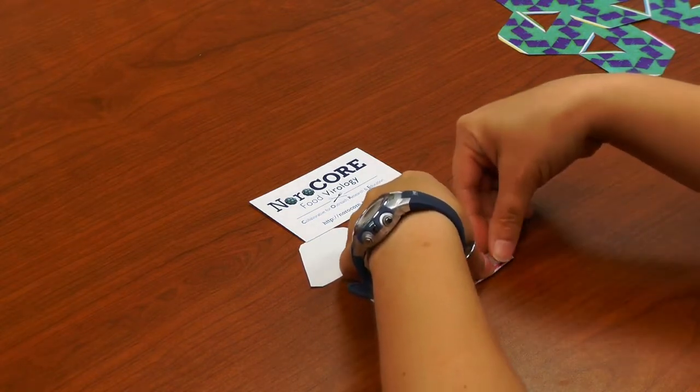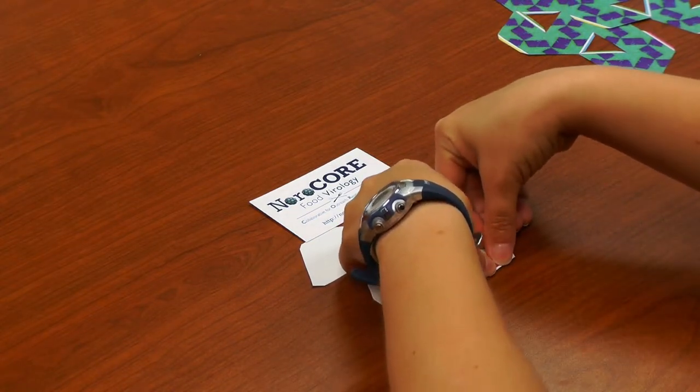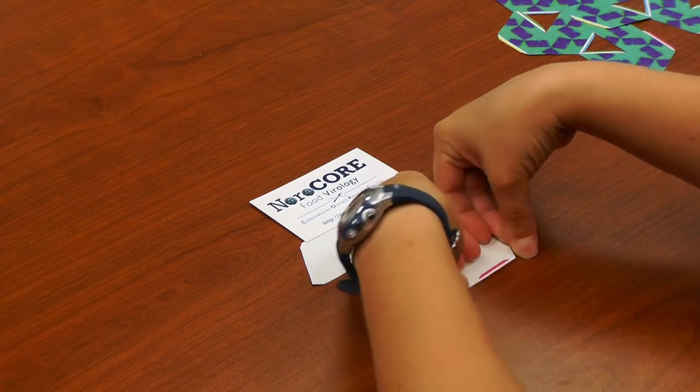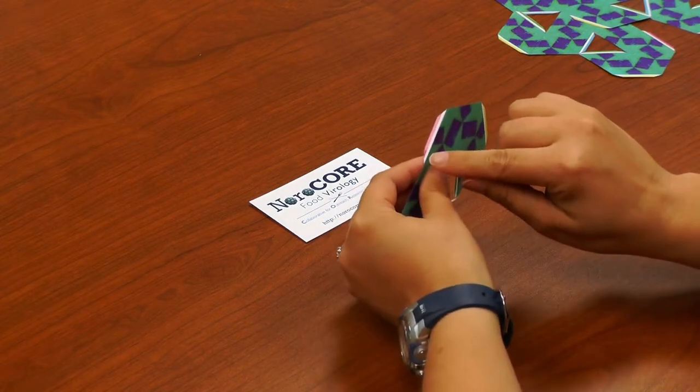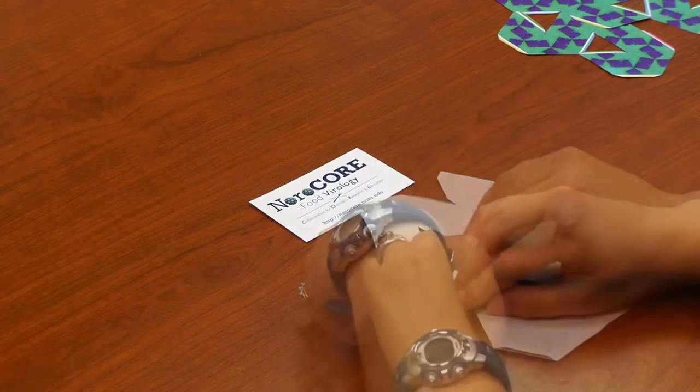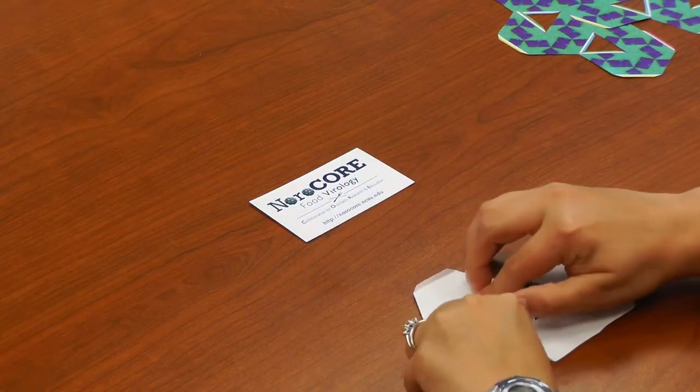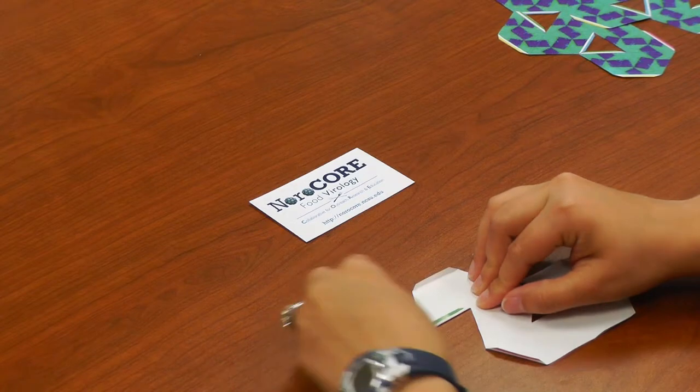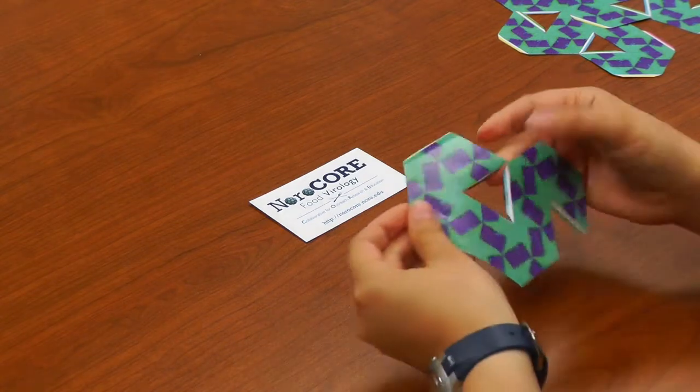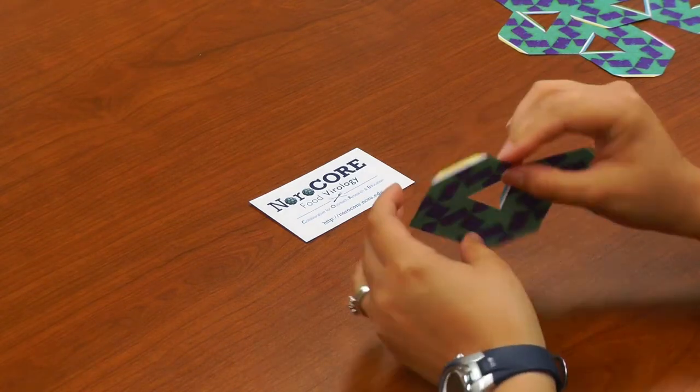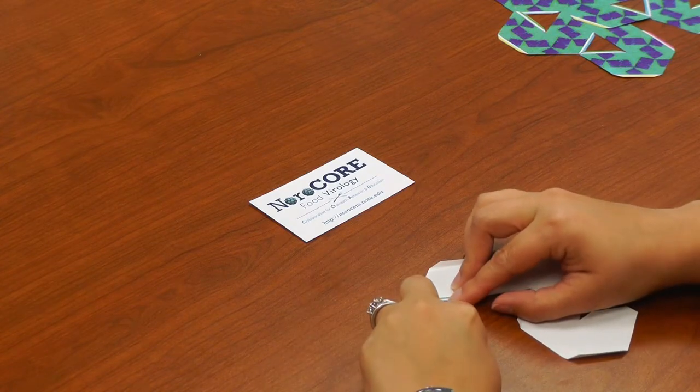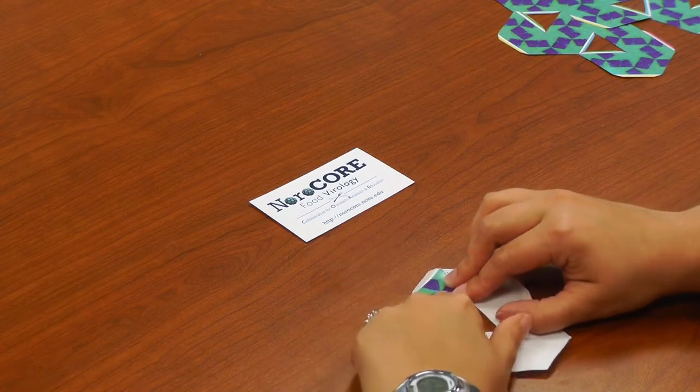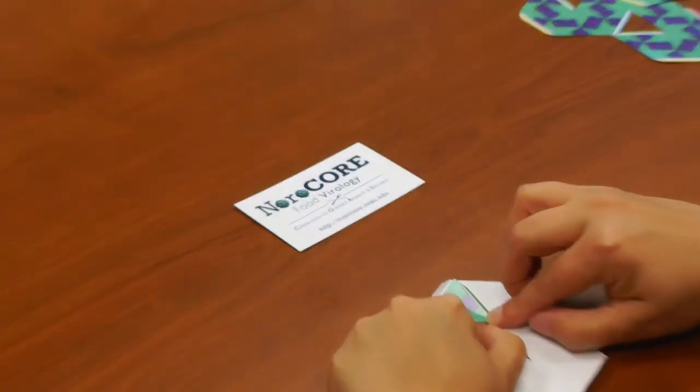All right, now it's time to fold. As you're doing the tabs, try to only fold the white space on the tabs and not any of the printed line. Now it's time for all of these internal folds. I like to flip it over and bring it up until I can see the line, then do a nice crisp fold.